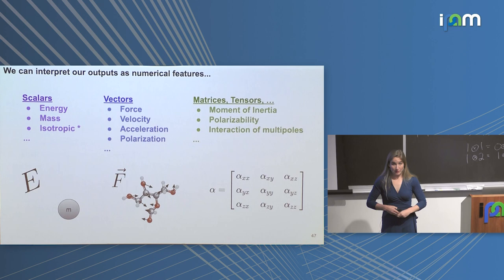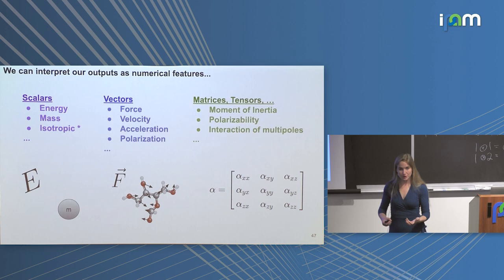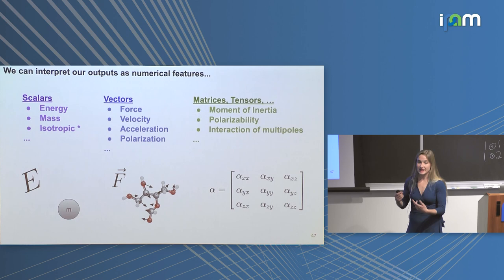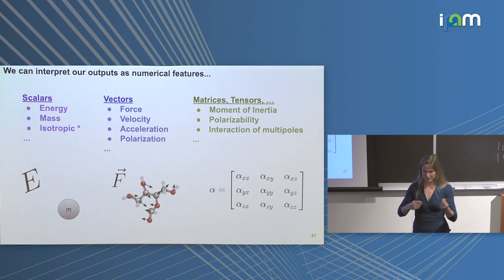Inputs and outputs to the network can be interpreted as numerical features: scalars such as mass or energy, vectors such as forces, polarizations, velocities, or higher-order objects like moment of inertia tensors, polarizability, or complex interactions between multipoles.